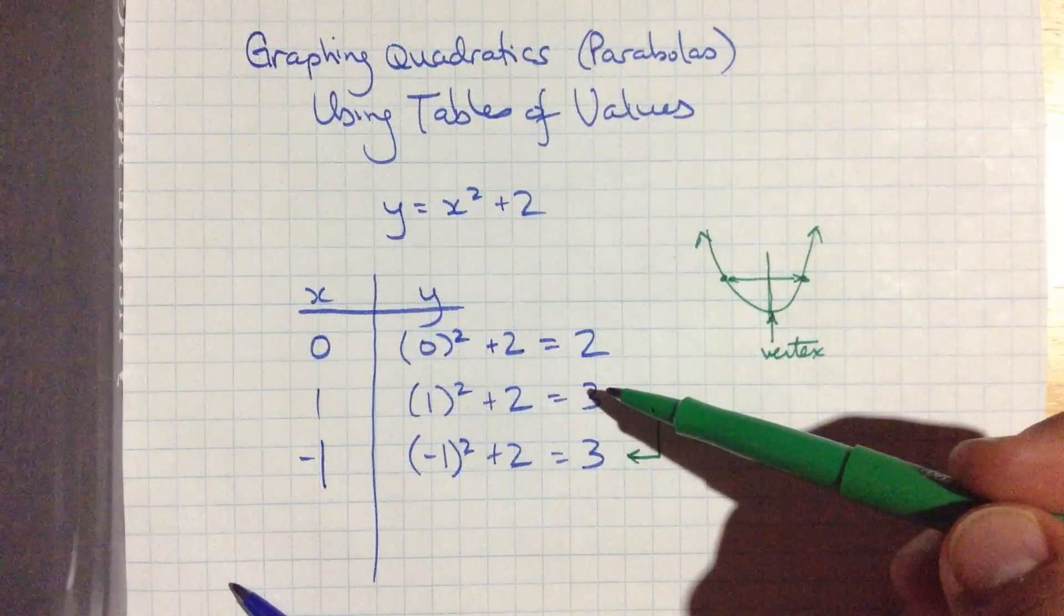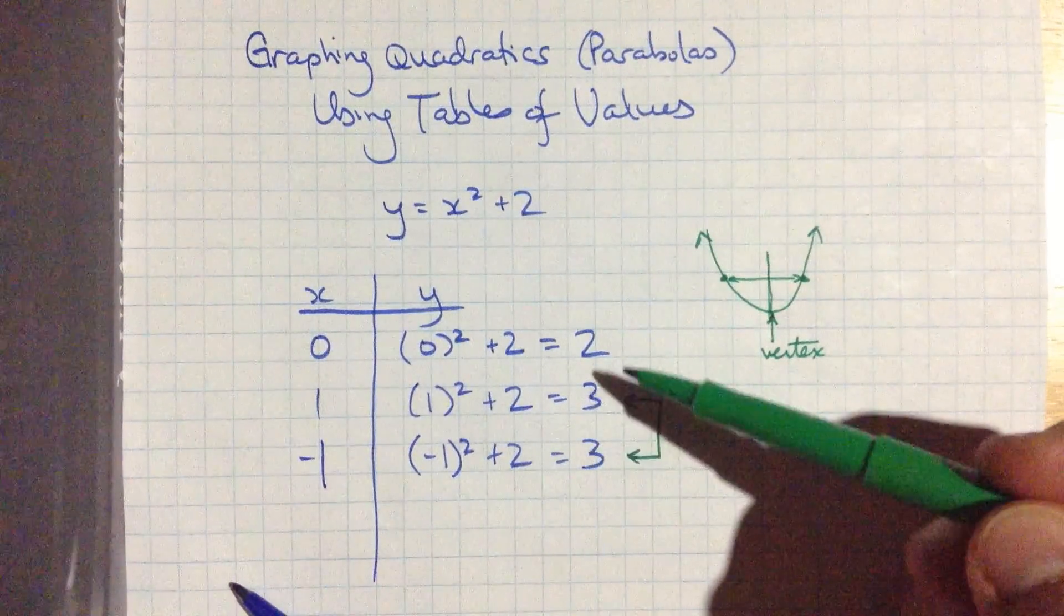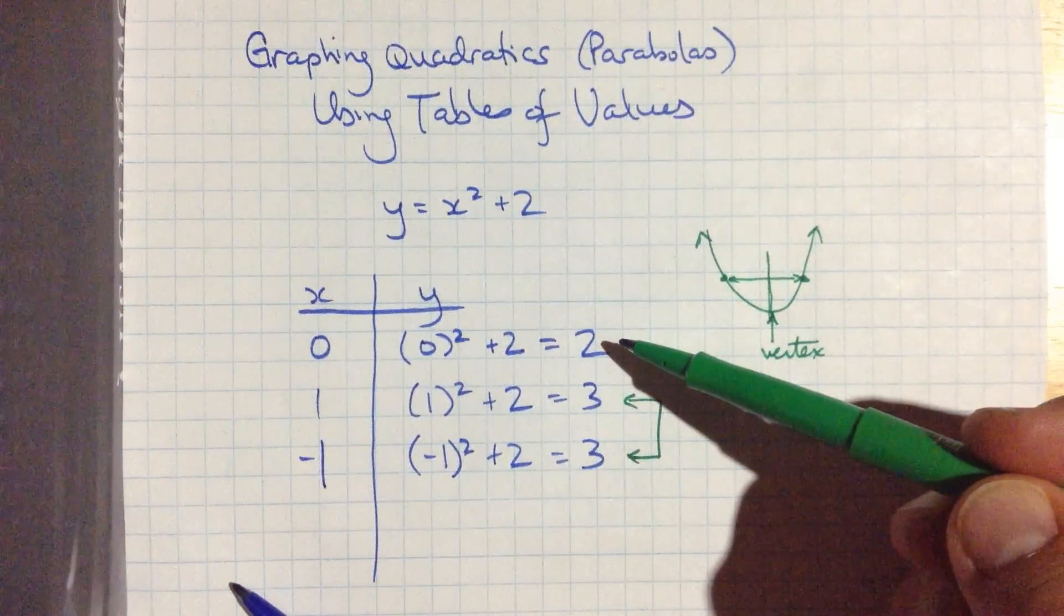So I know that halfway between 1 and negative 1 is the vertex, and that point happens to be 0, 2.